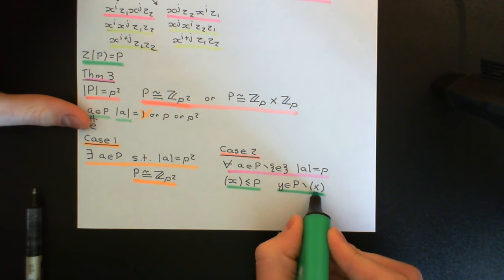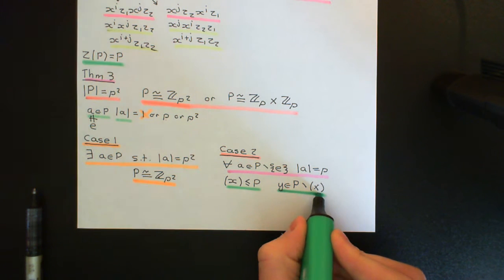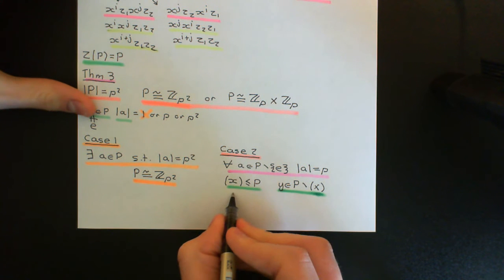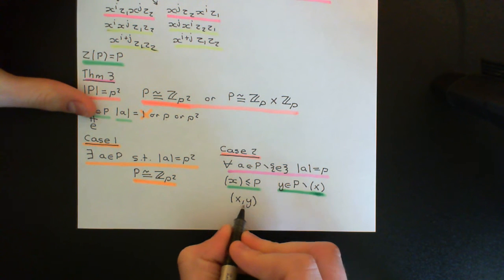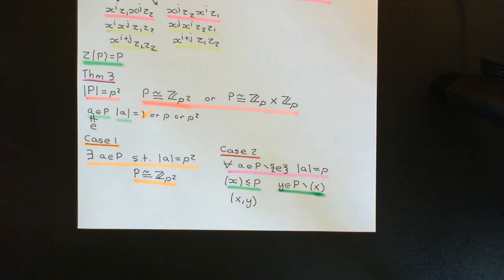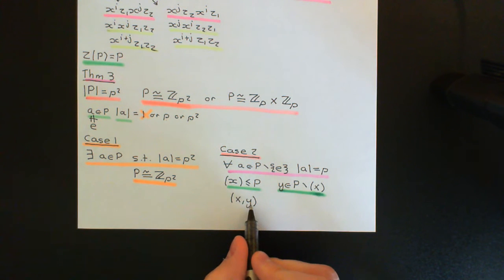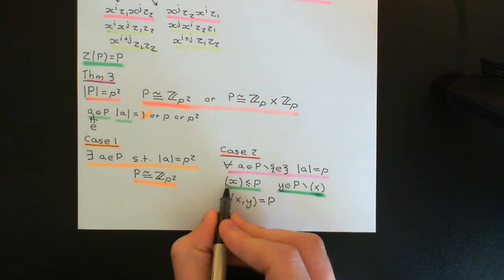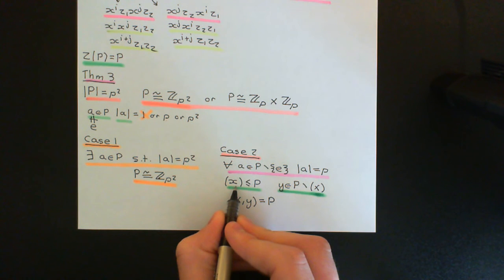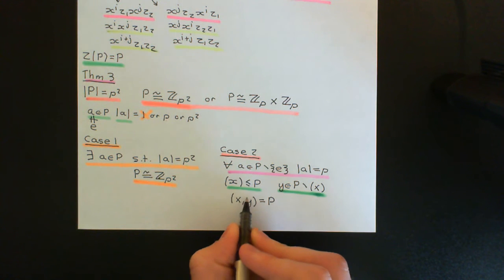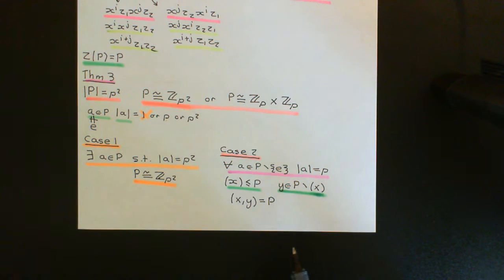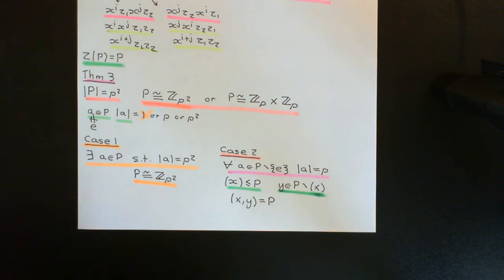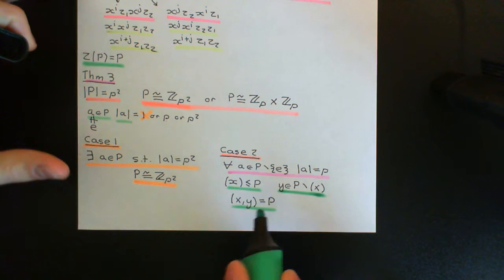So y is not the identity, because the identity is inside ⟨x⟩, and it's not going to be any power of x either. Now the subgroup generated by the two elements x and y — please do watch the video on subgroups generated by subsets of groups if you're not familiar with this — must be equal to the entire group, because it has to be bigger than the cyclic subgroup generated by x, which has order p. So it's got order greater than p, and by Lagrange's theorem the only option is that the order equals p-squared. Therefore the subgroup generated by x and y equals the entire group capital P.